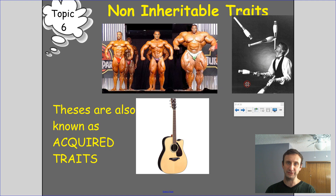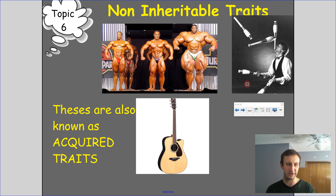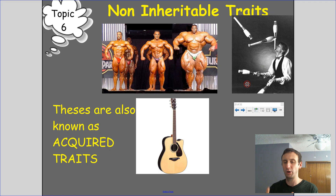Natural selection is basically where nature decides — it's survival of the fittest. The thing most adapted to survive will survive and pass on its traits, and things not well adapted to survive will die off. It's important to know those four points around natural selection and how natural selection feeds into evolution — that over time, as natural selection keeps occurring, we get more and more difference in traits and more and more change.